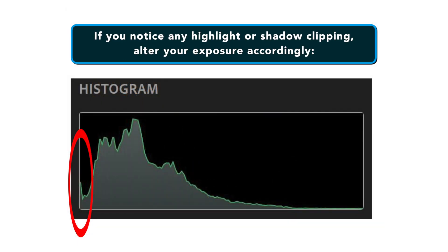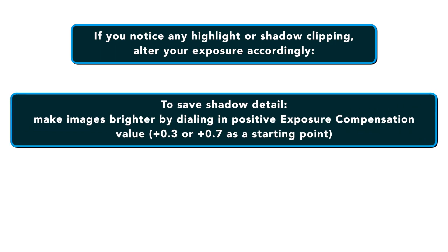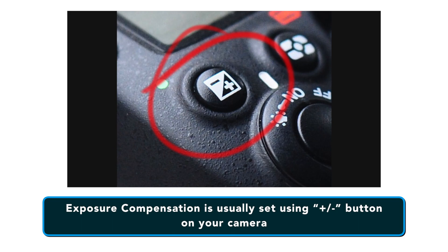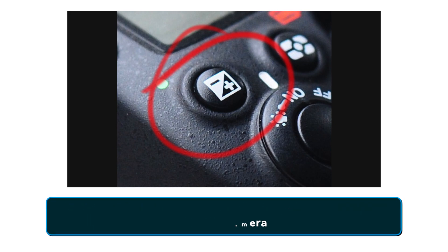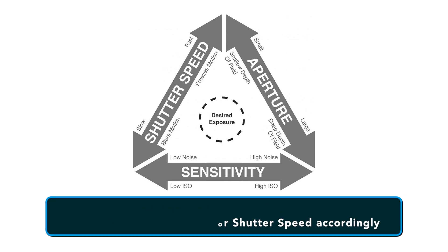Should you notice any highlight or shadow clipping, alter your exposure accordingly. To save shadow detail, make images brighter by dialing in a positive exposure compensation value — say from plus 0.3 to plus 0.7 as a starting point. To save highlight detail, make images darker by dialing in negative exposure compensation values — say minus 0.3 to minus 0.7 as a starting point. Exposure compensation is usually set using the plus/minus button on your camera. If you prefer to shoot with manual settings, just change ISO, aperture, or shutter speed accordingly.